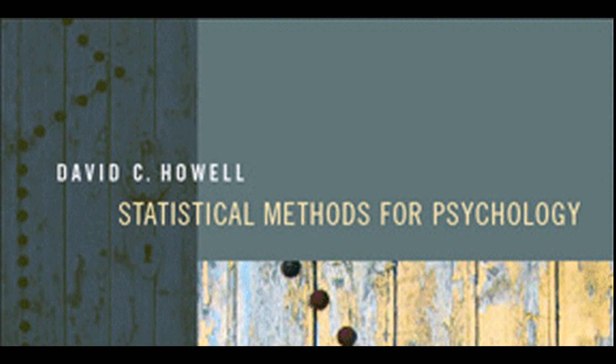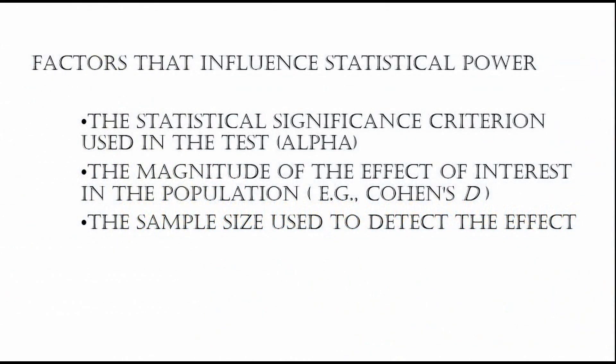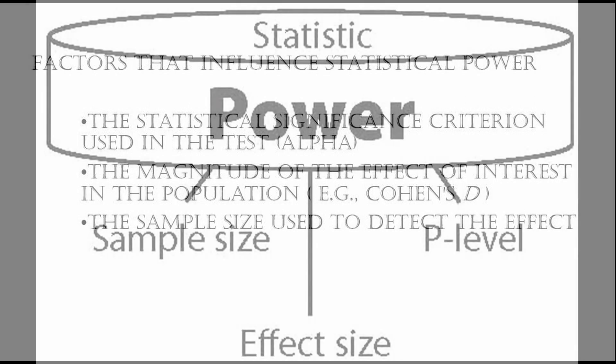There are many ways to manually calculate power, such as those given in Howell's textbook, but in my opinion it is easier to use G*Power mainly because it saves time and you know there won't be any errors in your calculations. Just to discuss a few factors that influence statistical power: firstly, it's the alpha level that you set. Having a smaller alpha level such as 0.01 as opposed to 0.05 will increase the chances of making a type 2 error.